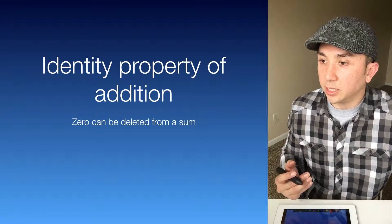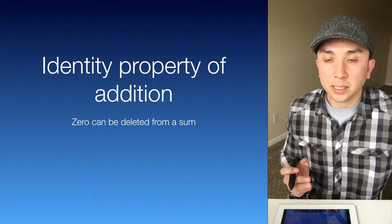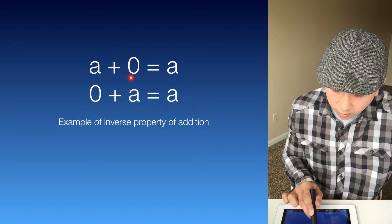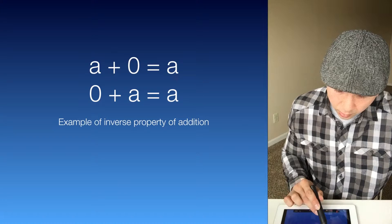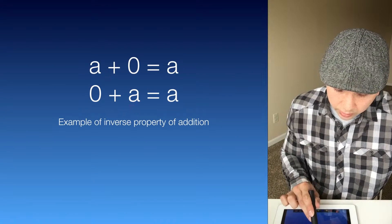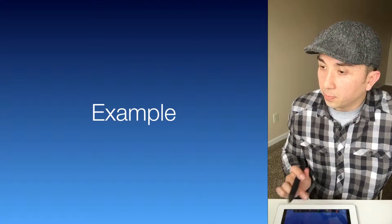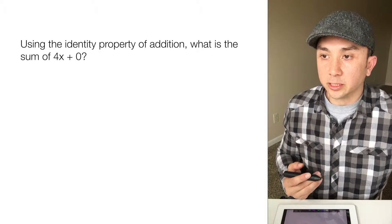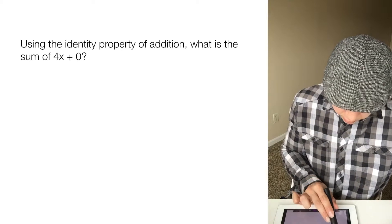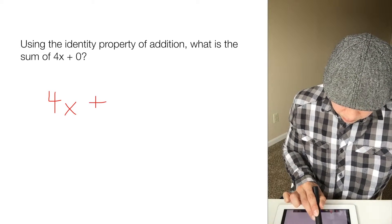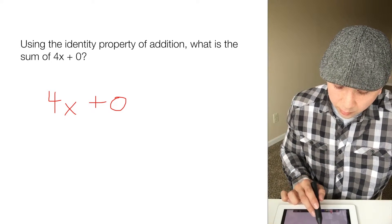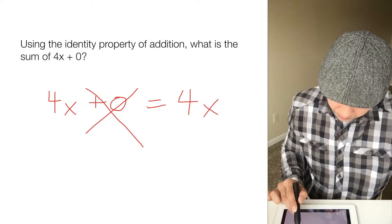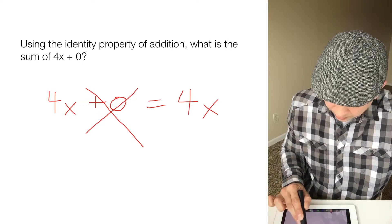The identity property of addition states that 0 can be deleted from a sum. So if we have a plus 0, we can delete 0 and just write a. Or if we have 0 plus a, we can delete 0 and just write a. For example, using the identity property of addition, what is the sum of 4x plus 0? We can delete 0 and just write 4x. So the sum of 4x plus 0 is 4x.